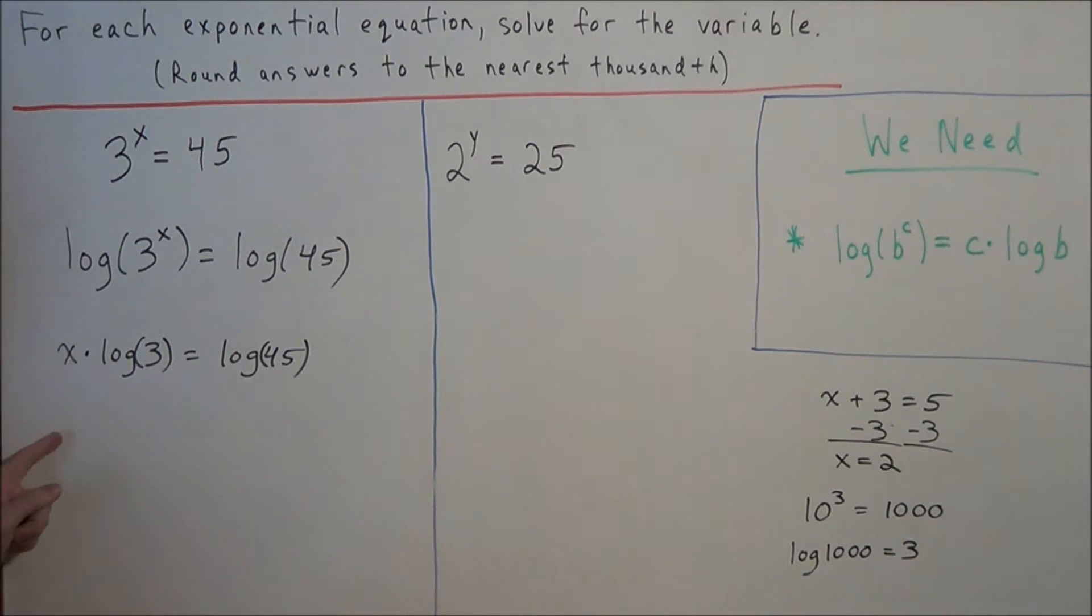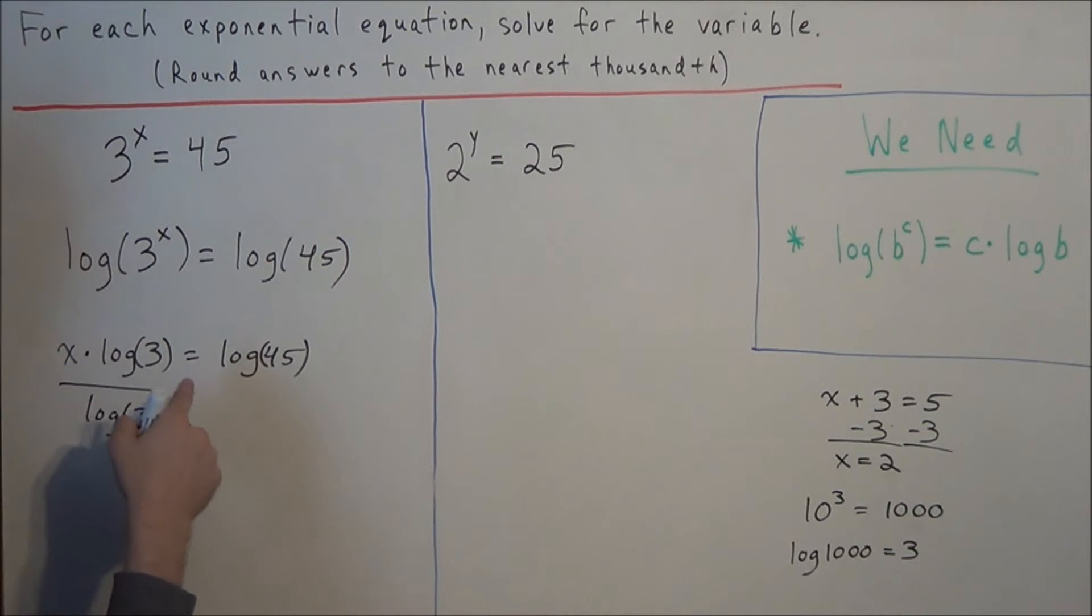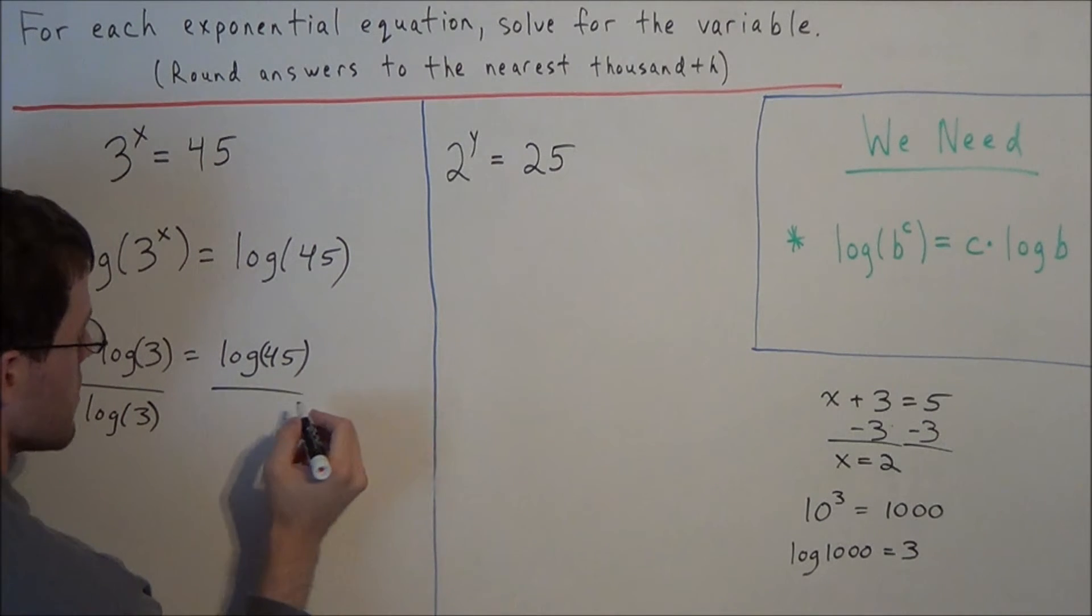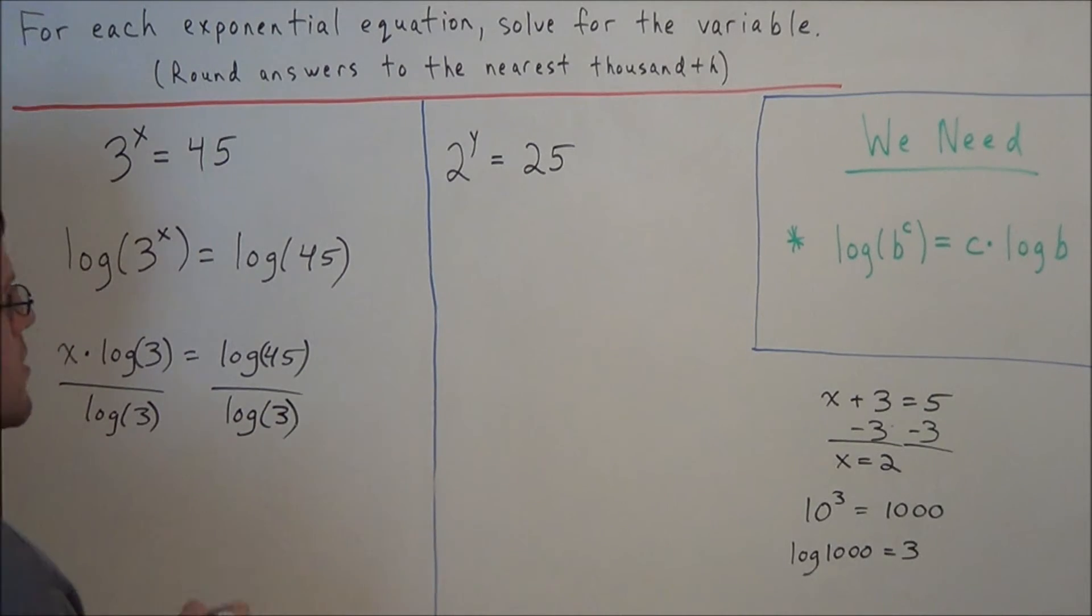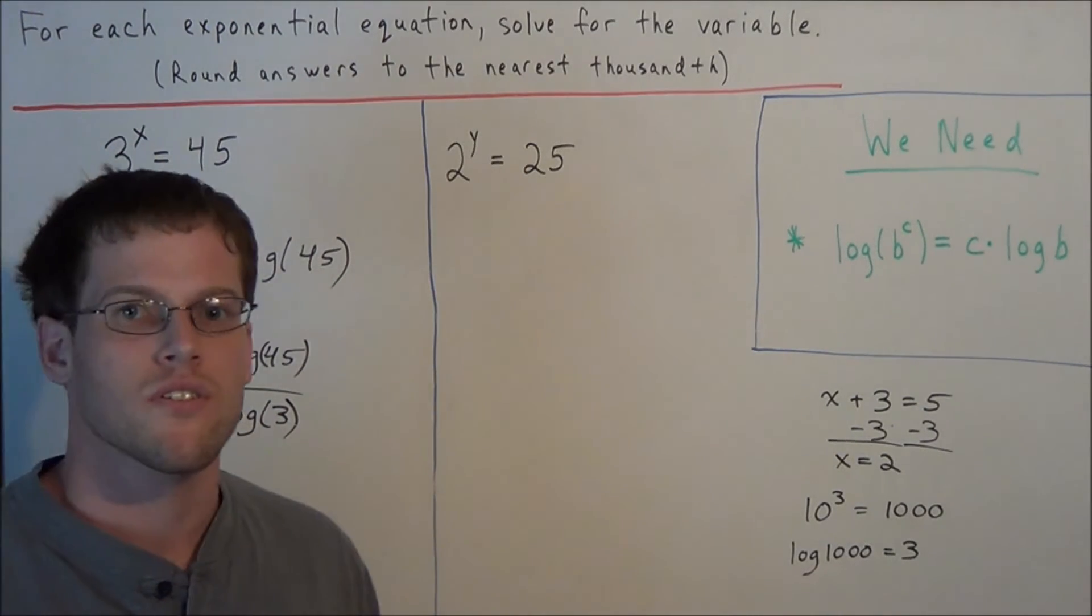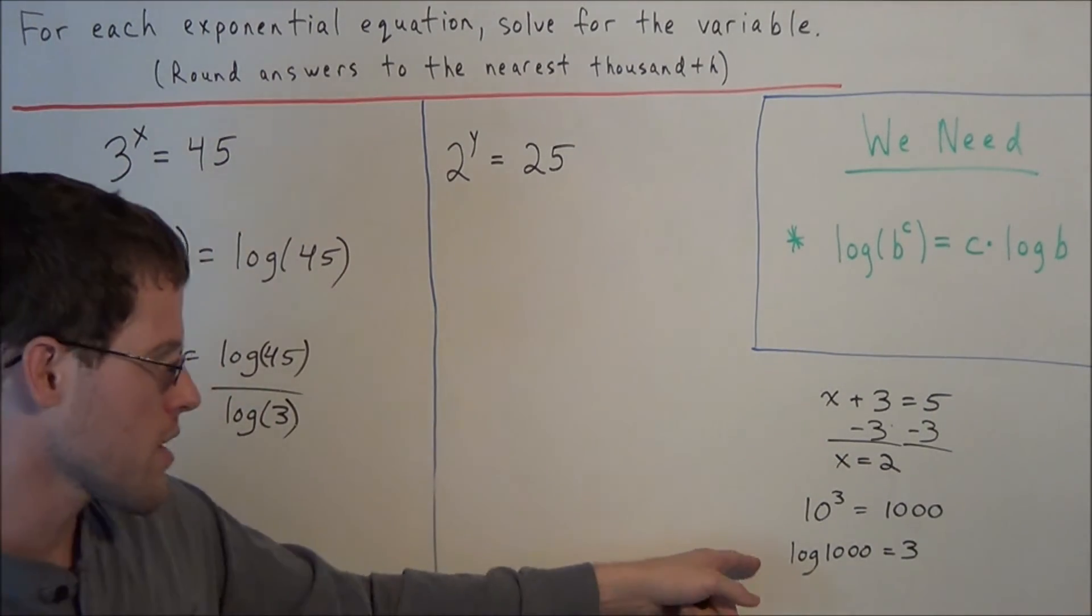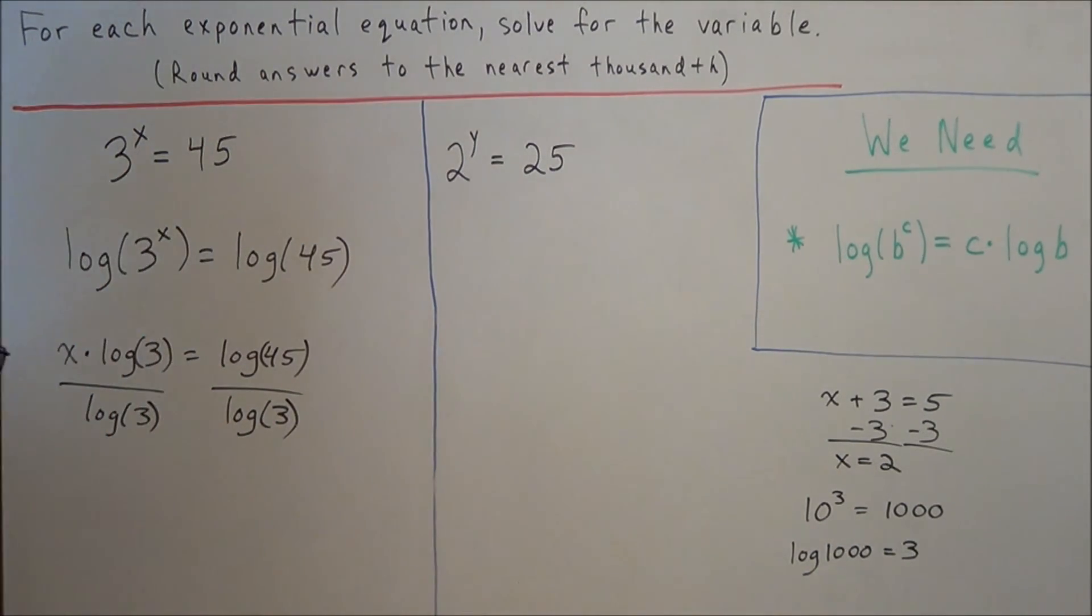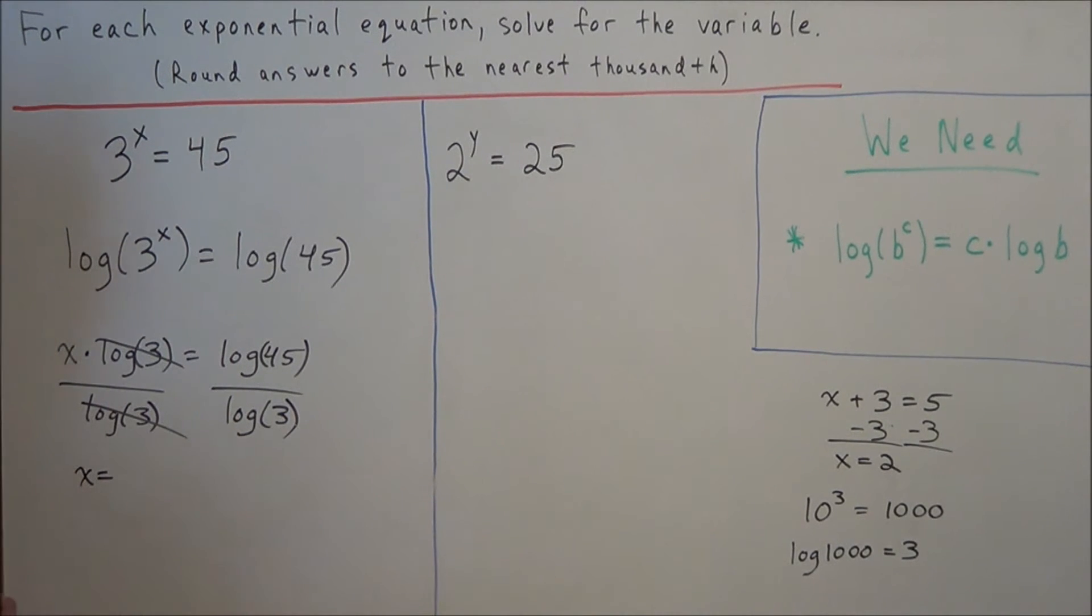So now to solve for x, all we need to do is divide both sides by log of 3. Remember, x is attached to log 3 by multiplication and the inverse of multiplication is division. So this concept of inverses, doing the inverse operation, is huge in algebra, so that's how we want to think of logarithms, the inverse of exponents. So now log 3 divided by log 3 cancels and now we have that x is equal to, what is log 45 divided by log 3?